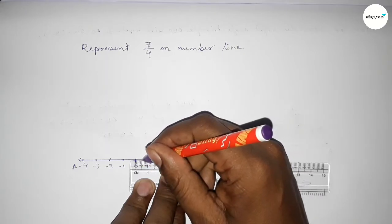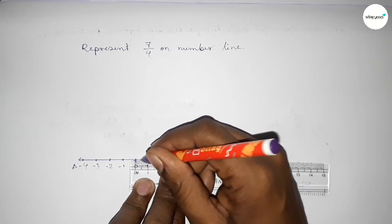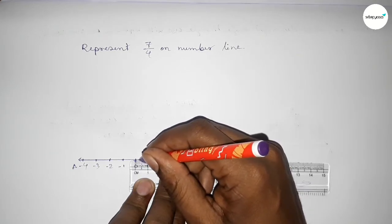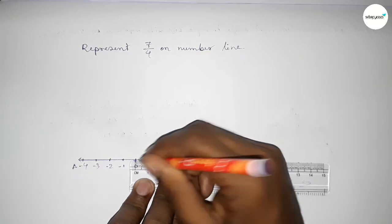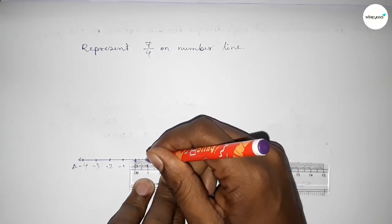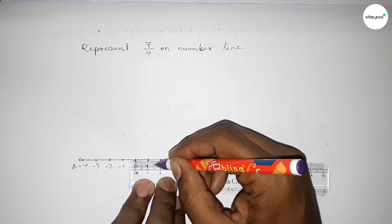Then take the half between 0 to 0.5, so this is approximately 0.25. And the half between 0.5 to 1, so this is approximately 0.75. Similarly, taking the first half between 1 to 2.